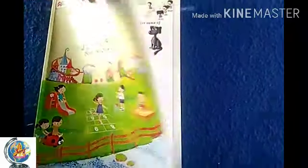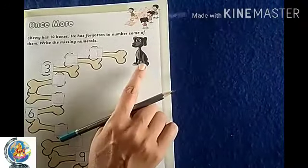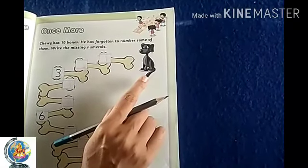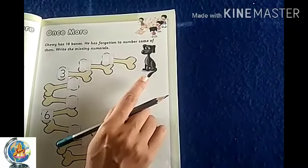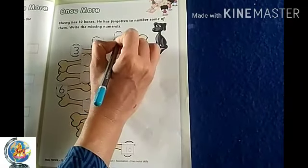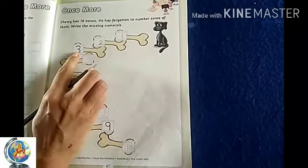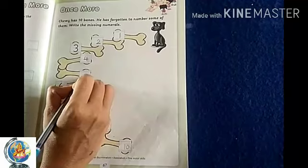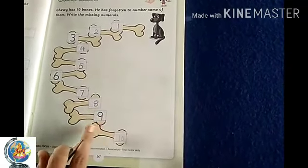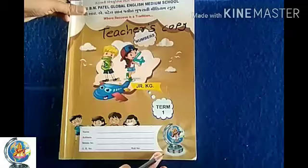Now take our maths textbook, open it to page number 67. Look at here — what is this? Yes, this is a dog. A dog has 10 bones. He has forgotten to number some of them. So write the missing numbers. Let's pick out numbers 1 to 10 and write them: 1, 2, 3, 4, 5, 6, 7, 8, 9 and 10.